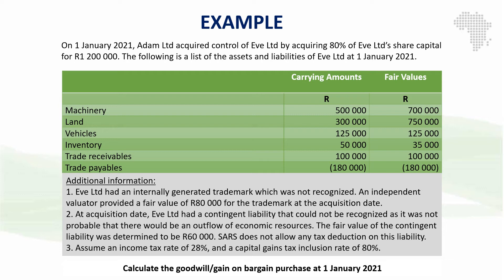We are also told that at acquisition date, IFE Limited had a contingent liability that could not be recognized as it was not probable that there would be an outflow of economic resources. The fair value of the contingent liability is $60,000, and SARS does not allow any tax deductions on this liability. This contingent liability would not have been recognized in the individual financial statements of the subsidiary IFE. However, IFRS 3 requires us to measure and recognize it at its fair value at acquisition date, bringing it in at $60,000. Because there are no tax deductions on this, we will not account for any deferred tax.